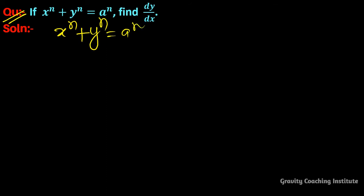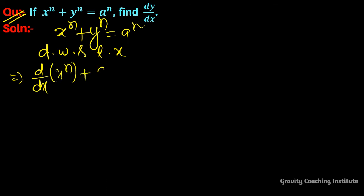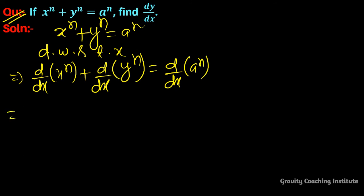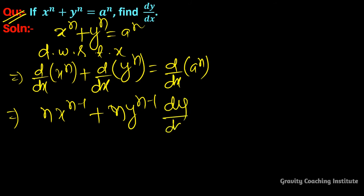Now, on differentiating both sides with respect to x: derivative of x to the power n plus derivative of y to the power n equals derivative of a to the power n. This gives nx^(n-1) plus ny^(n-1) dy/dx equals zero, since a to the power n is a constant, so its differentiation is zero.